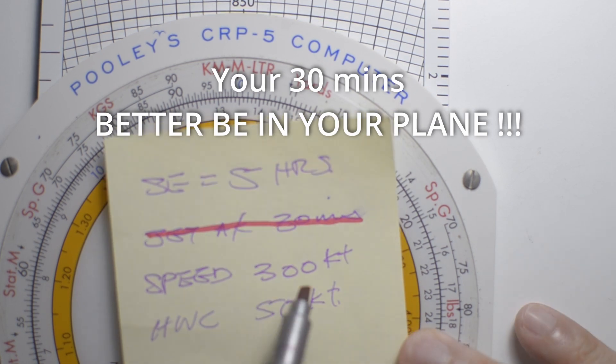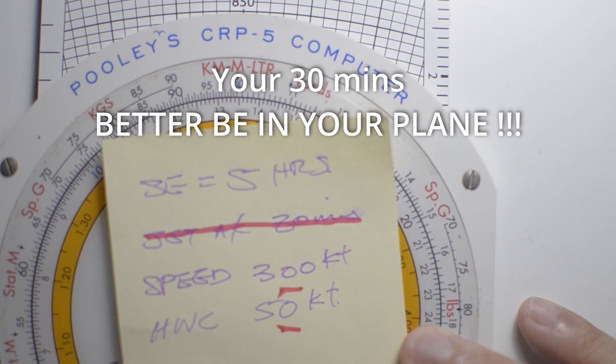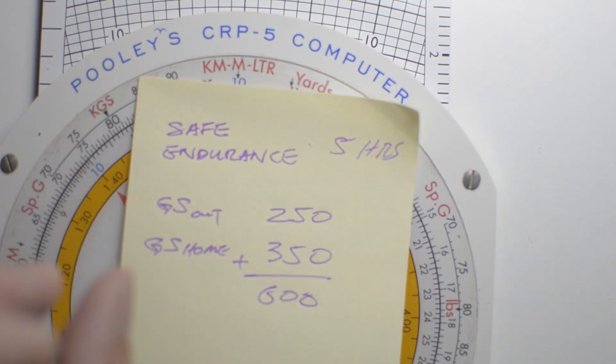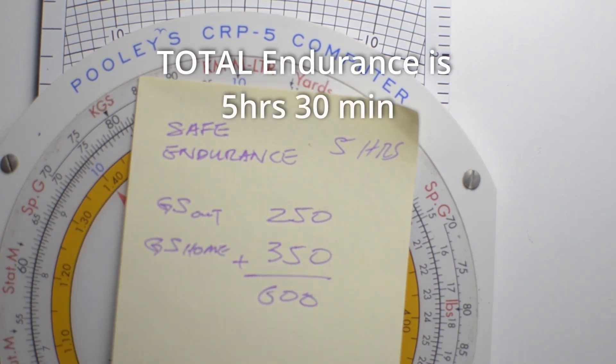So we won't need our mandatory reserves for this calculation. We are going to make use of the 300 knots and 50 knots in order to come up with the numbers that are important to us, and that is safe endurance is 5 hours.